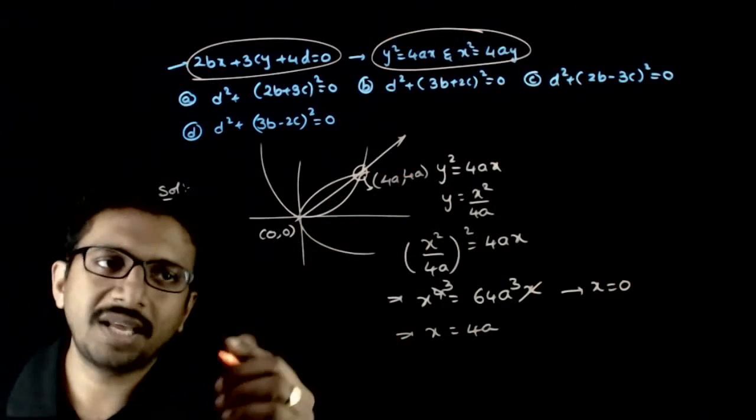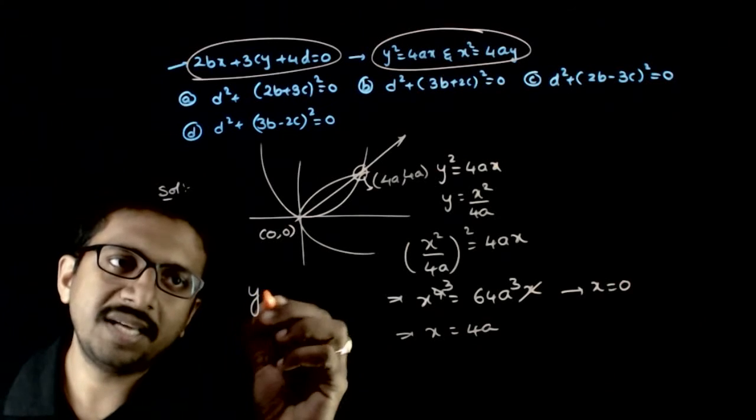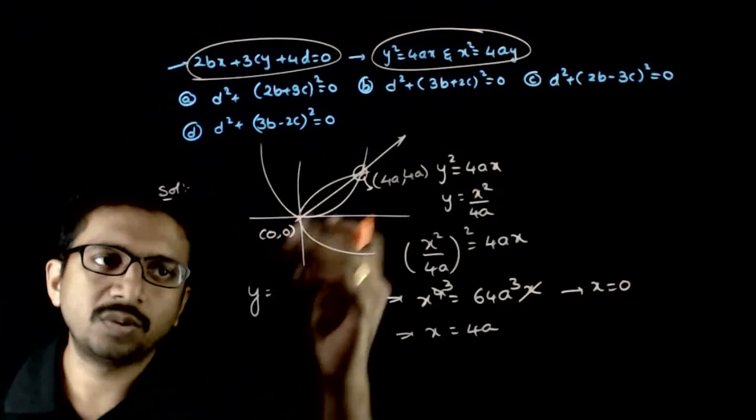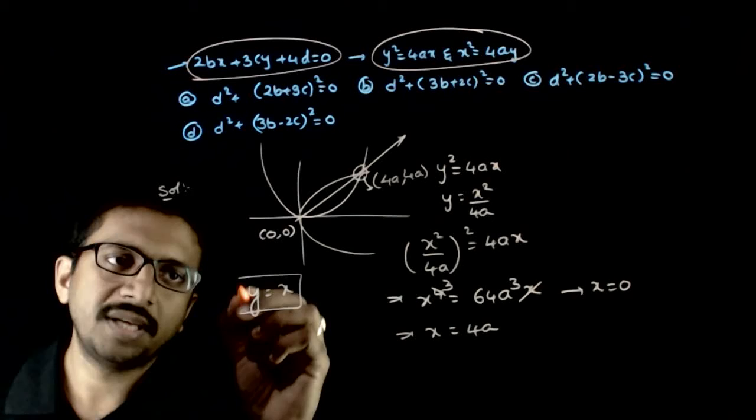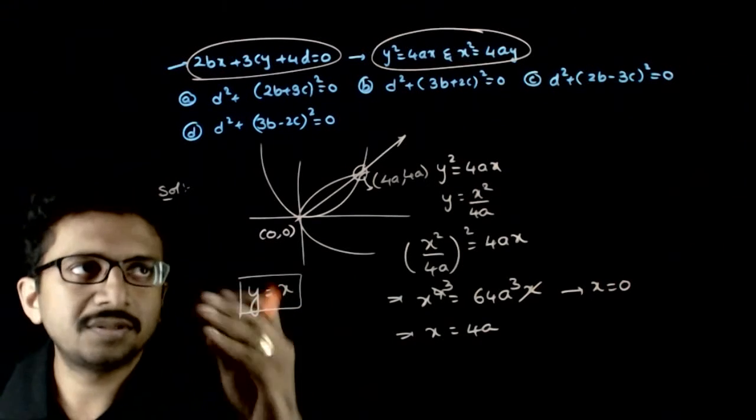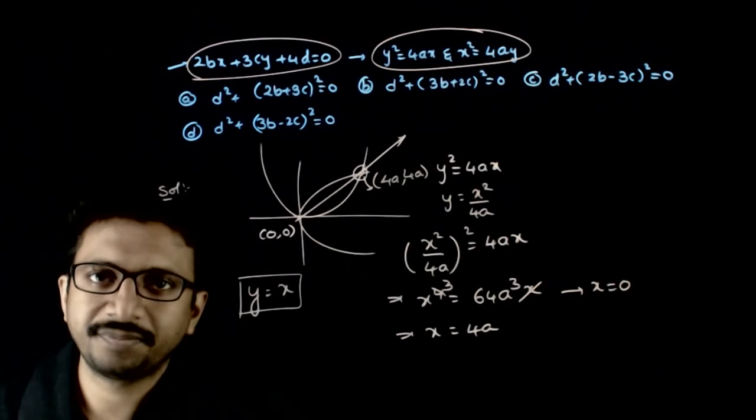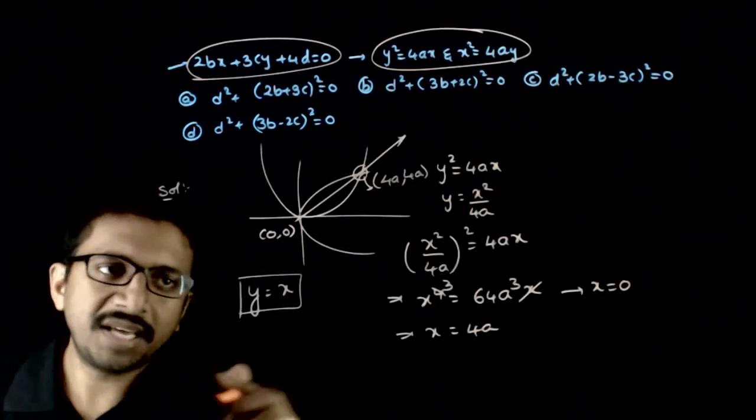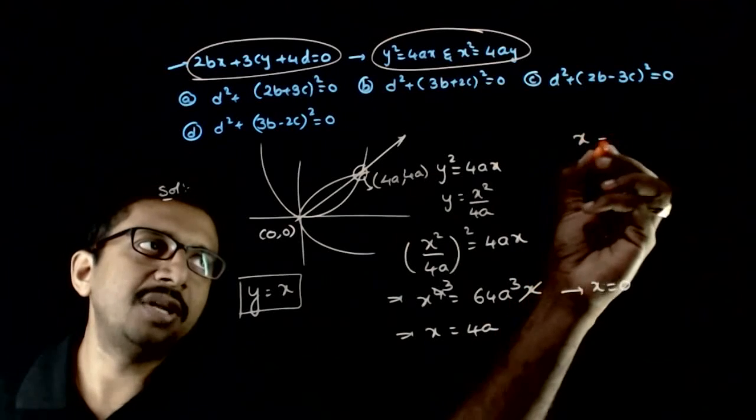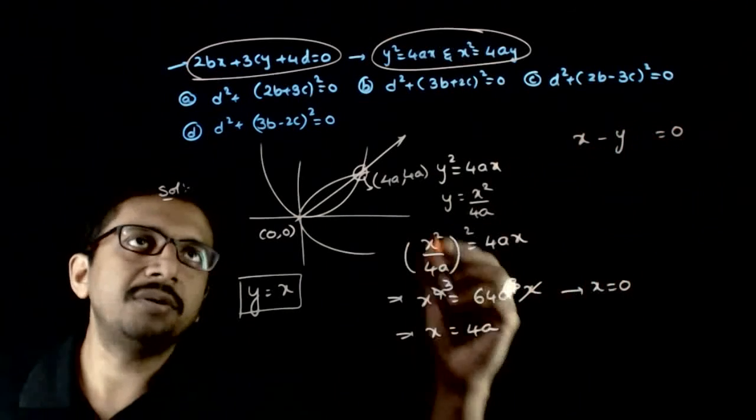Now obviously, what is this line? This line is y equals mx, slope is 1, so y equals x. So that is the line of intersection, y equals x. So this should be exactly same as this line. So the actual line is x minus y equals 0.